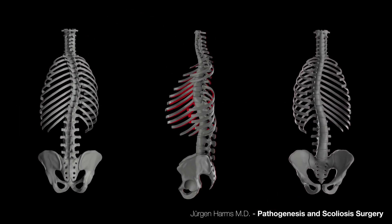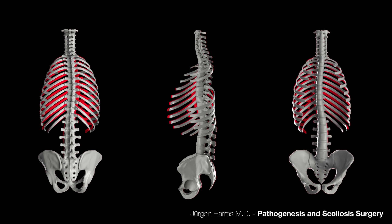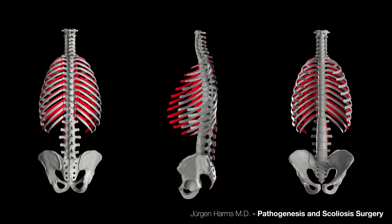The reverse of the pathogenetic processes is carried out by implantation of a rod and screw system. This is the correction of the abnormal curvature in the three planes of the spine.